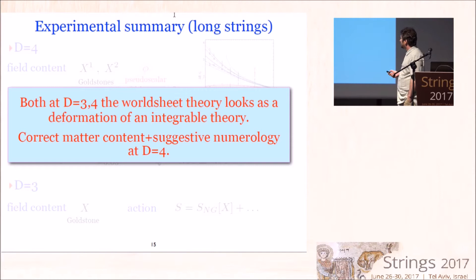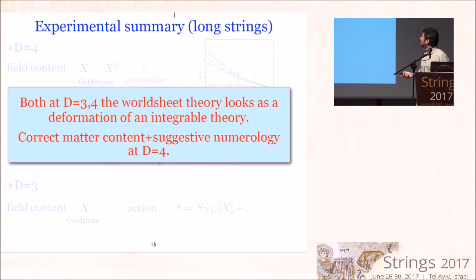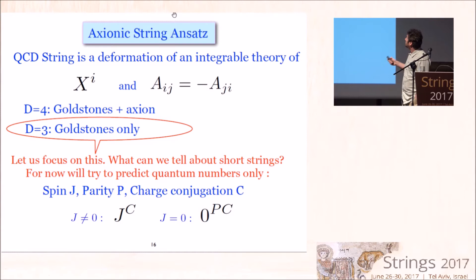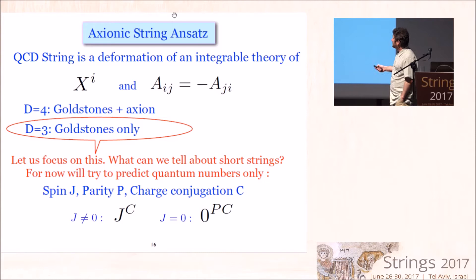The experimental summary for long strings can be formulated as follows: both at d=3 and d=4, the matter content we find — two Goldstones and one pseudoscalar in d=4, one Goldstone in d=3 — coincides with the matter content of a possible integrable theory. There is a suggestive numerology about the coupling value. Taking it somewhat seriously, the natural thing to say is that the worldsheet theory of the QCD string is a deformation of this integrable theory. We call this the axionic string ansatz: QCD string is a deformation of integrable theories of Goldstones plus a pseudo-scalar on the worldsheet.